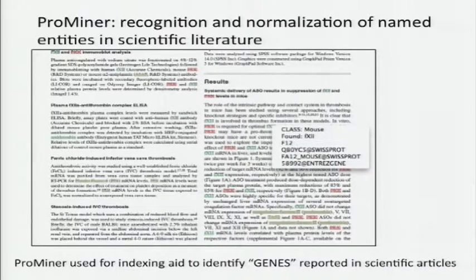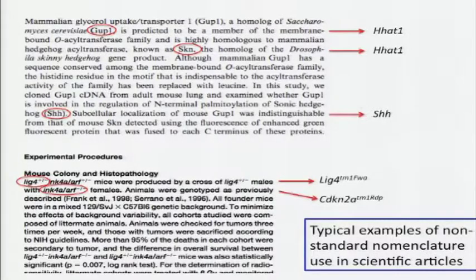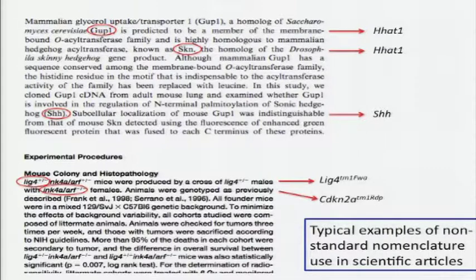This is a shot from ProMiner, which is used for indexing genes. This shows examples of what kind of things you actually see when I said that nomenclature adherence in journals is very bad. At the top is a paragraph which shows SHH — sonic hedgehog — which is actually correctly provided here, but the others are not. And down below we have two different targeted mutations that are incorrectly shown. This is kind of typical of the standard nomenclature you see in scientific articles in many, many journals.